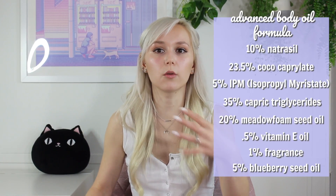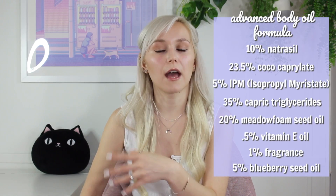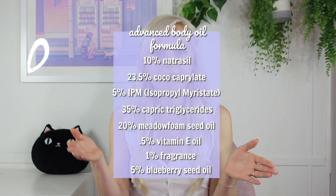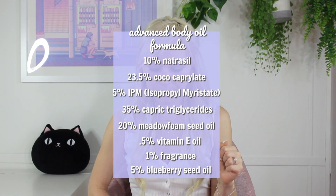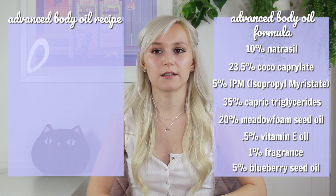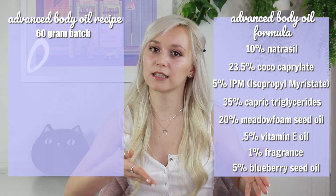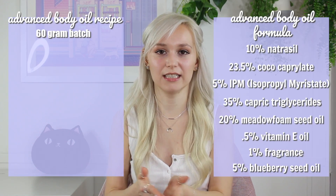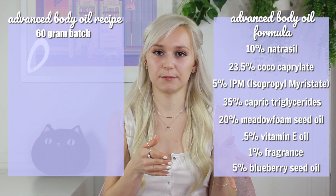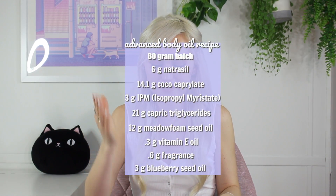The last ingredient is coco caprolates — I add up all the percentages I already have, subtract from 100, and I have 23.5% left, so I use that for the coco caprolates at 23.5%. Now I have all my percentages. The goal of this body oil is to keep it dry, non-greasy, and somewhat clear so the green from the blueberry oil shines through. This is the formulation for the advanced body oil. Now I need to transfer it to a recipe — 60 grams — and I want you guys to try it yourselves. Pause the video and try converting these percentages to grams with a batch size of 60.